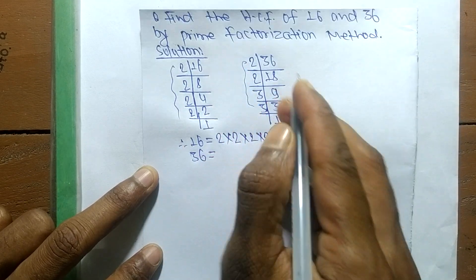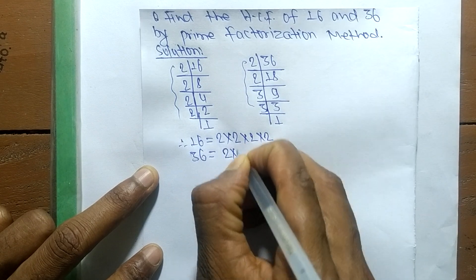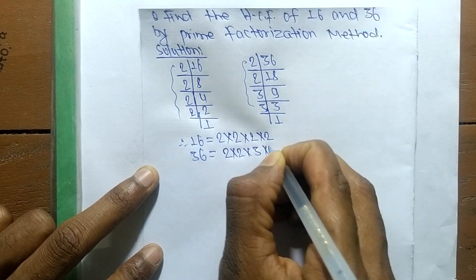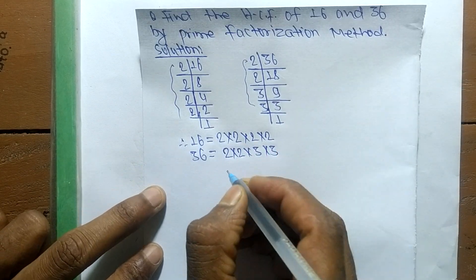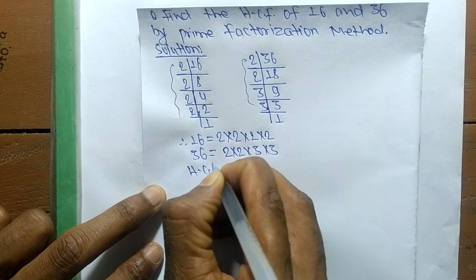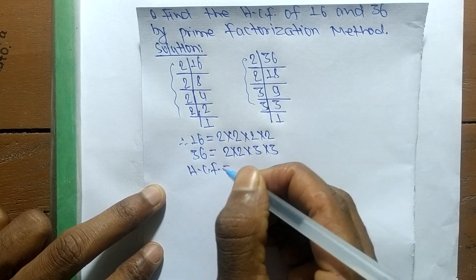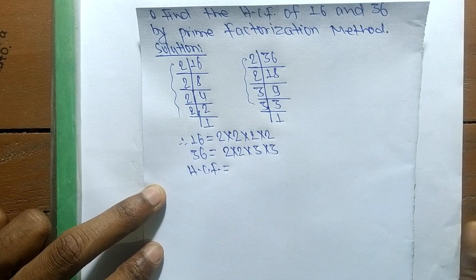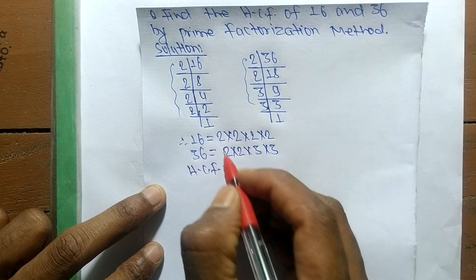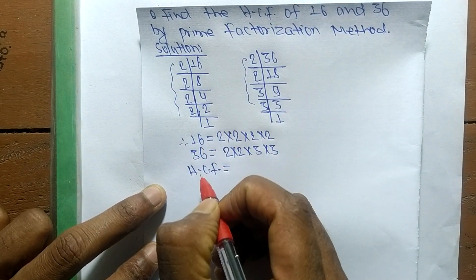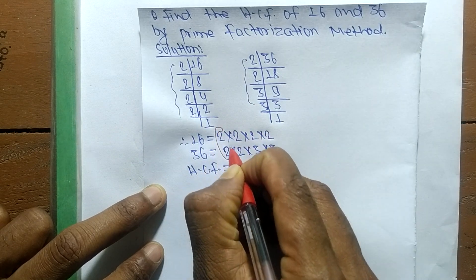So the HCF is equal to... now we have to find out the common factors in the prime factors of 16 and 36. The first common factor here is 2...